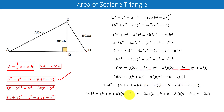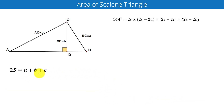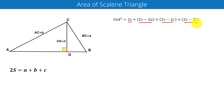Our target is to create the sum a plus b plus c in each factor of this expression. We can do this by adding and subtracting similar terms, giving us this expression. Since 2s equals a plus b plus c, we can write the equation as 16A squared equals 2s times (2s minus 2a) times (2s minus 2c) times (2s minus 2b). Taking 2 as a common factor from each term, we get 16 times s(s minus a)(s minus c)(s minus b).